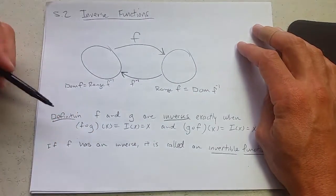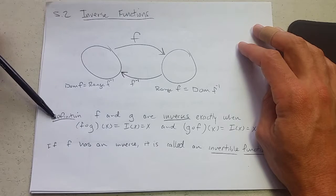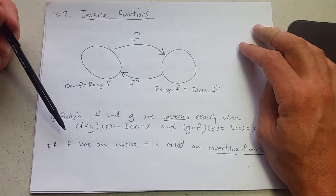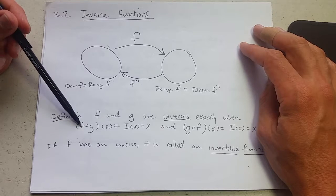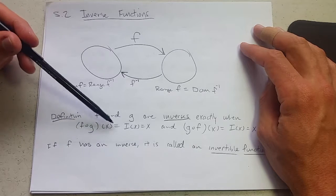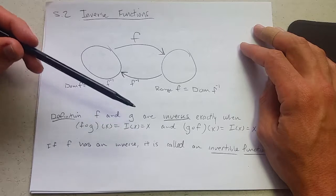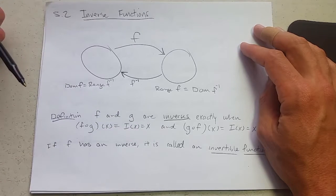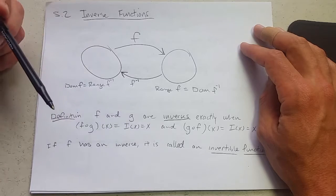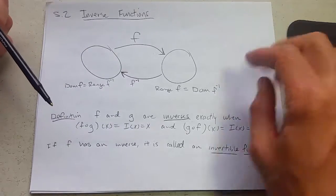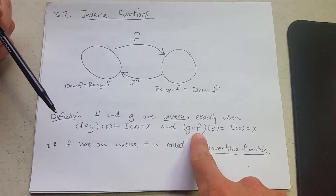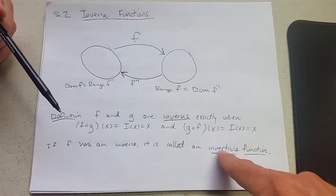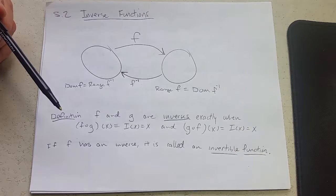The definition of inverses: f and g, two functions, are inverses exactly when they cancel each other, meaning f of g of x equals the identity which is just x. So if f and g cancel each other out and you just get x, and if you put them in the other way, g of f of x, if it cancels out to just be x, they are inverses.